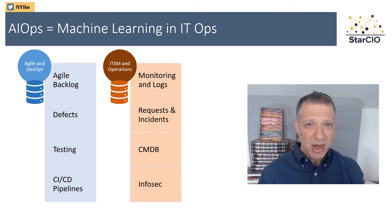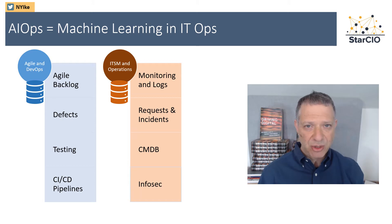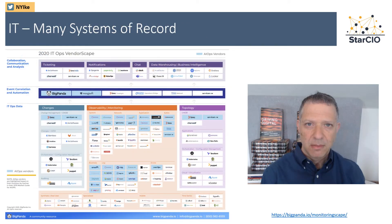So what is AIOps? It's really about centralizing the data that is part of operations, cleansing it, and then using machine learning to help us make better decisions and to automate aspects of our response.